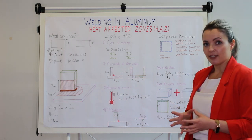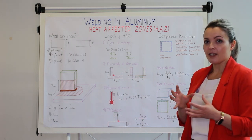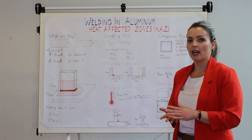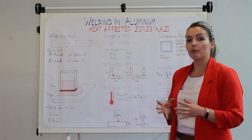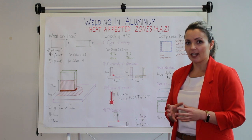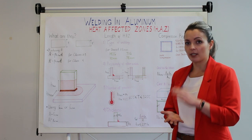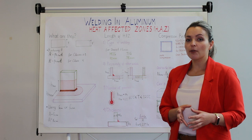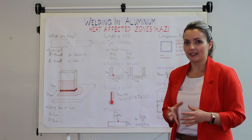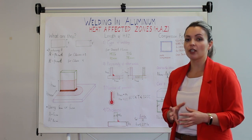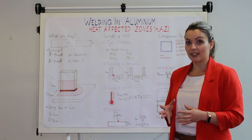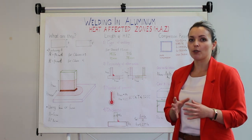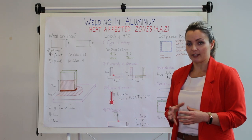Sometimes, in order to achieve the required weld thickness, we may need to lay down multi-pass welds. In this case, we expect that the temperature will be increased. Eurocode 9 suggests that in cases where we have temperatures above 60 degrees, we should increase the area that we will consider with reduced properties.